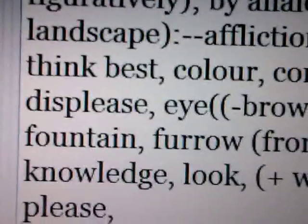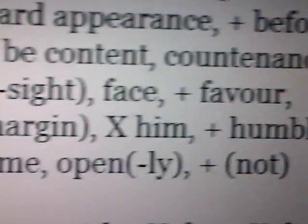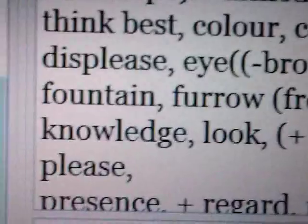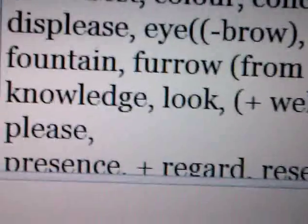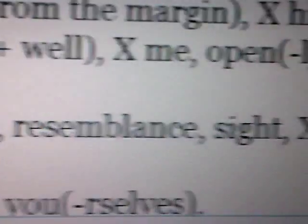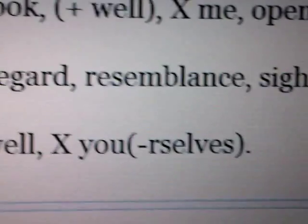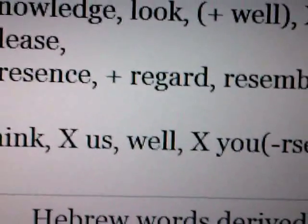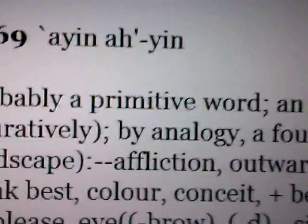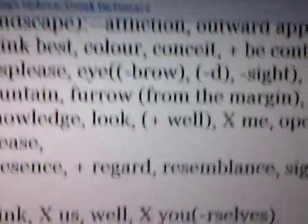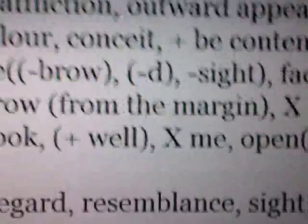And as we go further in this particular definition, let's pull it up right here. Favor. Then it says fountain, furrow, from the margin, plus humble, knowledge, look, open, openly, not, please, presence, regard. Then it says resemblance. So you see at what stage we find the word resemblance — then sight, think, well. What kind of word is this? One thing is clear: the first and the key meaning is not resemblance, because look how far down the list it's found.